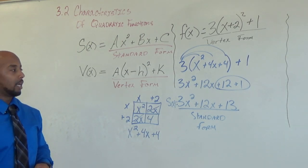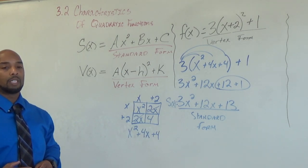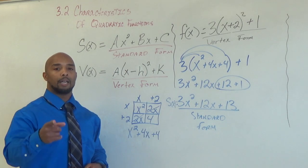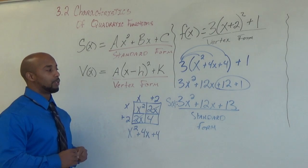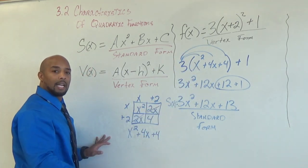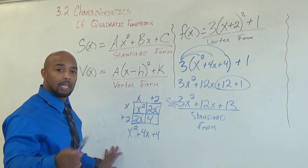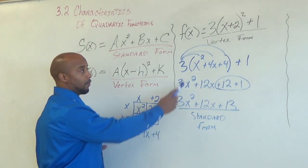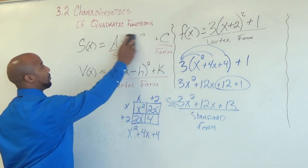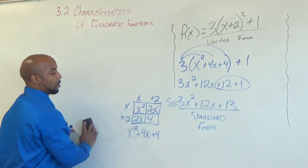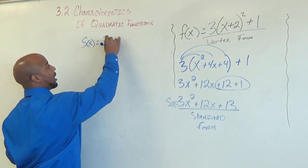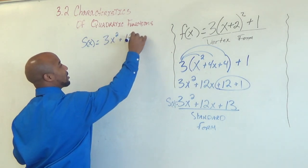Pause this video, jot this down, and ask yourself: what is exactly the same from my vertex form to my standard form? What you should have recognized is that the value for a in my vertex form and the value for a in my standard form were exactly the same number. A quick note you must know is that no matter whether you're going from vertex form to standard form, the value of a stays the same. So I'm going to write my standard form: S of x equals 3x squared plus 12x plus 13.